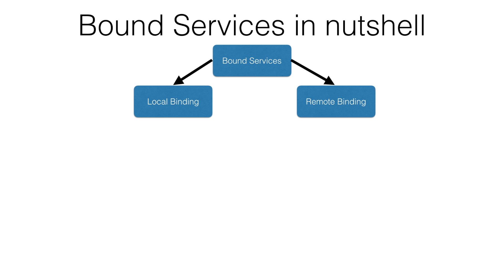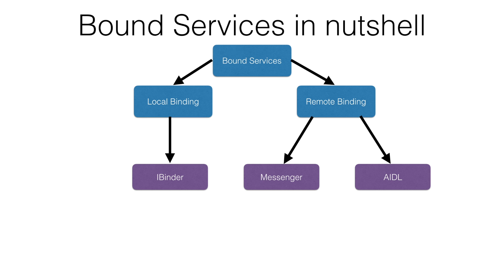Local binding is when the service and the other component which wants to bind to the service are part of the same app process. Remote binding is when the service and the component that wants to bind to that service are in two different processes. Local binding is implemented using the iBinder interface, and remote binding is implemented via two mechanisms: the Messenger API and AIDL, which stands for Android Interface Definition Language.